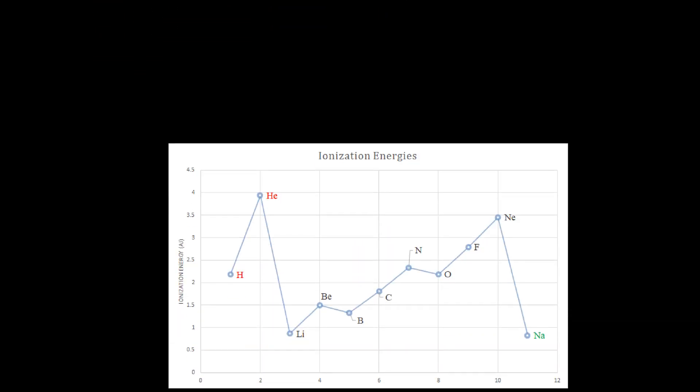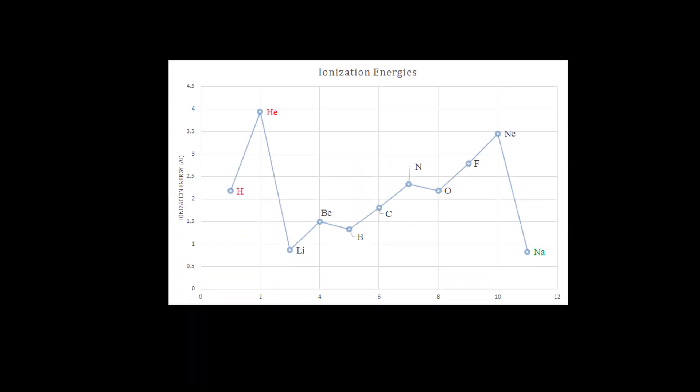So let's actually look at a plot of ionization energies for the first, looks like this is the first 11 elements. What we note here is that going from hydrogen to helium, we're within the first row, the first shell, and we are increasing the ionization energy, which can be explained purely based on an increase in the atomic number.